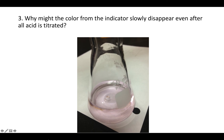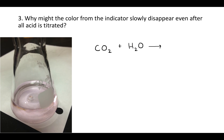Question 3 asks: why might the color from the indicator slowly disappear even after all acid is titrated? So you finish adding your base and it's dark pink, but if you leave it for half an hour, it becomes a much lighter pink. If it's becoming lighter pink, that means the solution is becoming more acidic, because phenolphthalein is pink in basic solution. So how is the solution — to which you're not adding anything — becoming more acidic?